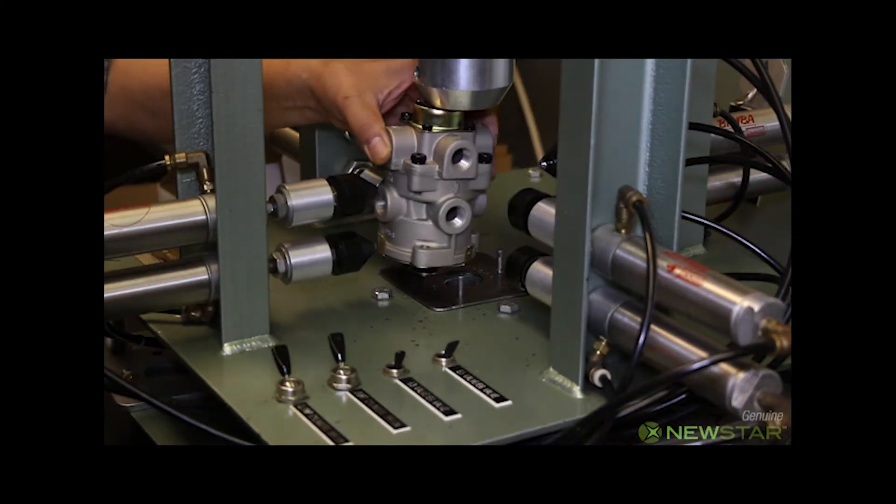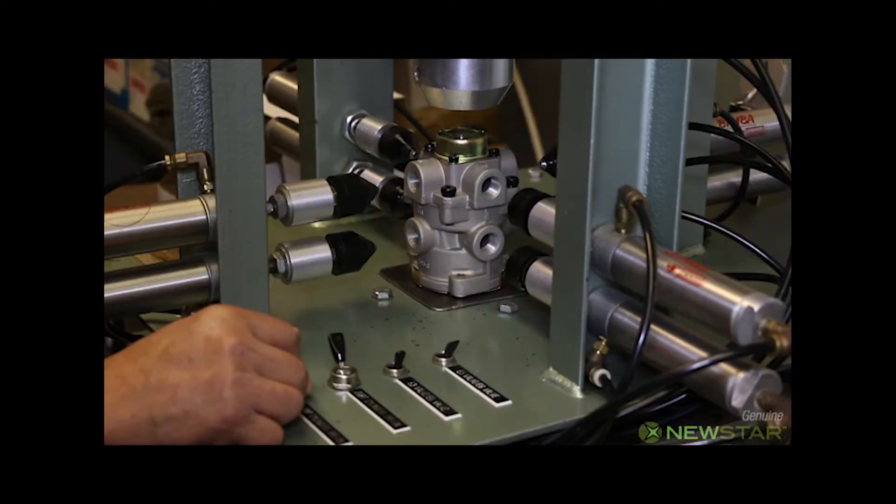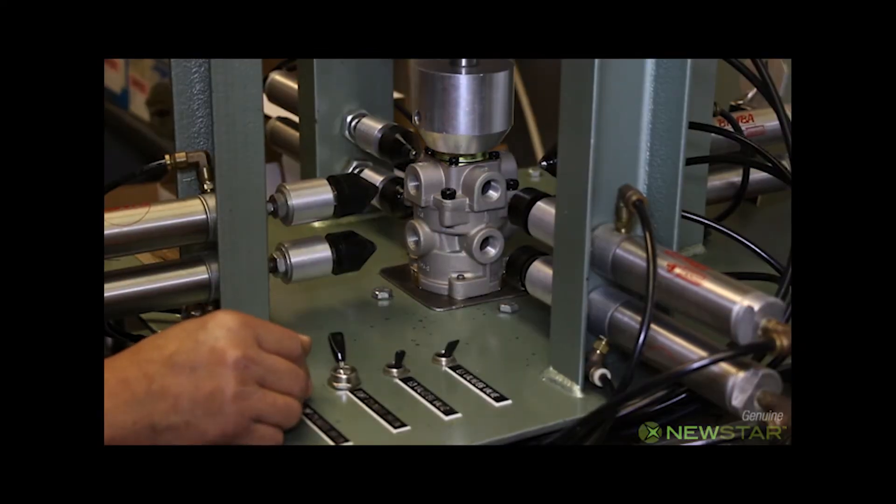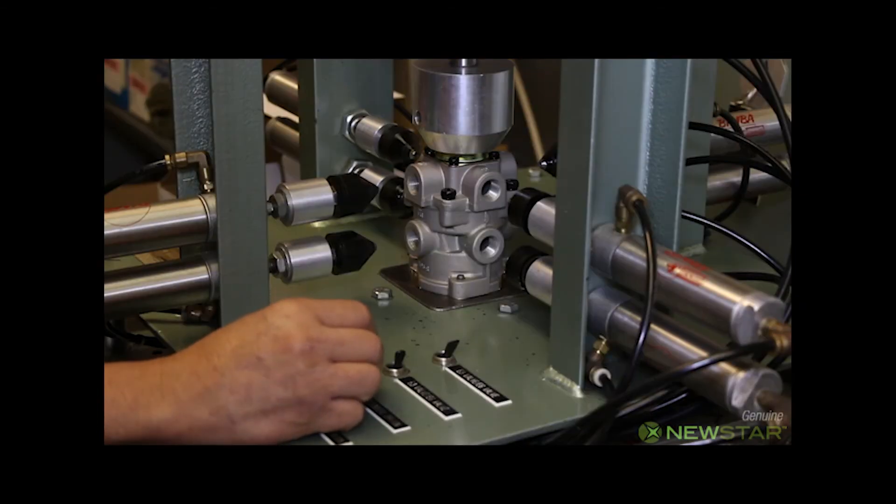Here we're testing E6 type foot valves. This is a dual circuit valve and our automated fixture will test both circuits. This is what activates the foot valve - nothing more than a cylinder at the bottom.